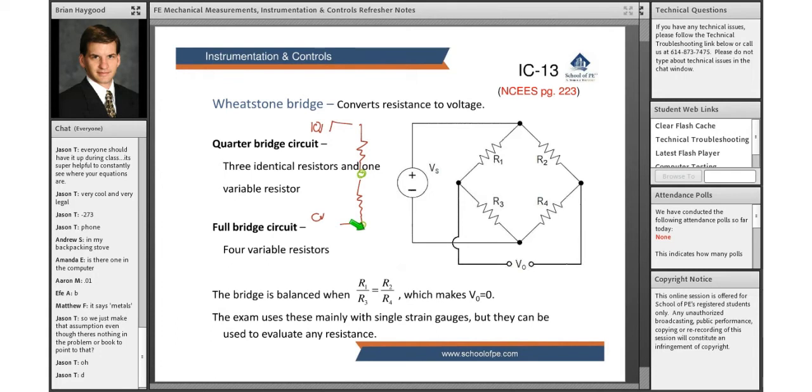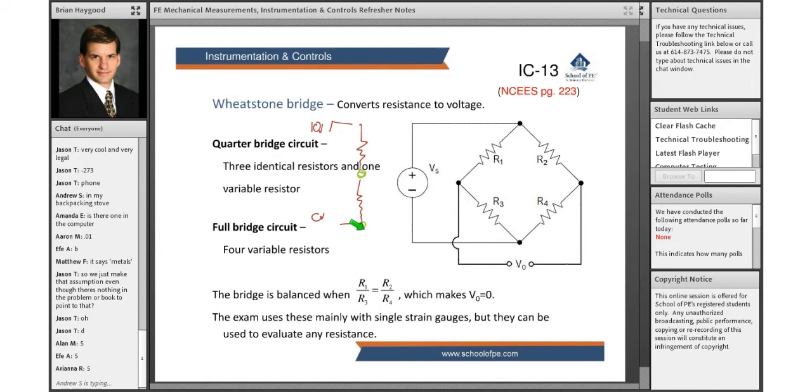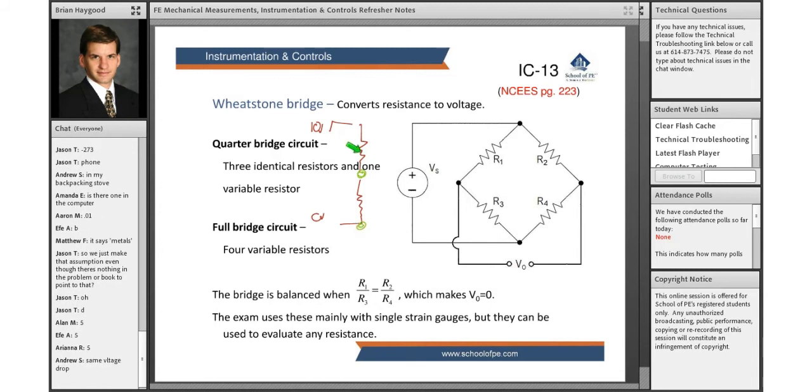Those two resistors are identical, yeah, and it doesn't matter if the top one is a million ohms and the bottom one's a million ohms. As long as they're the same, I'm going to get a five volt difference between those two.